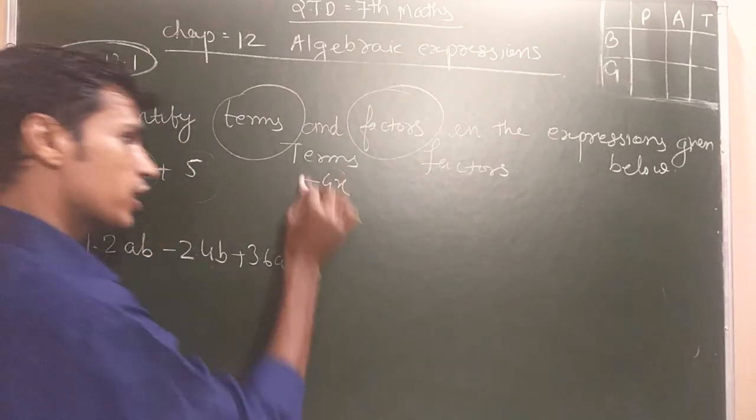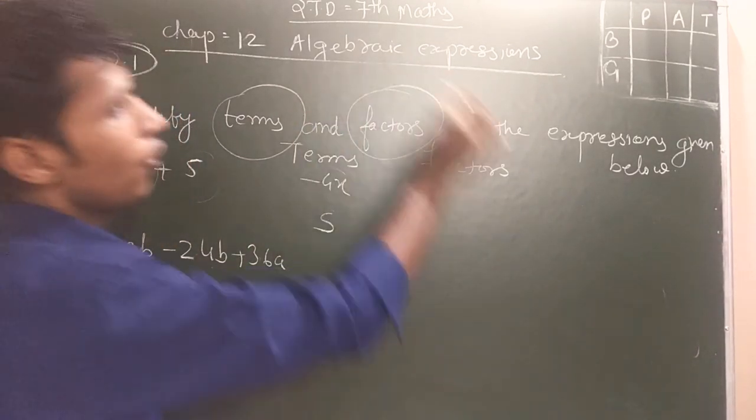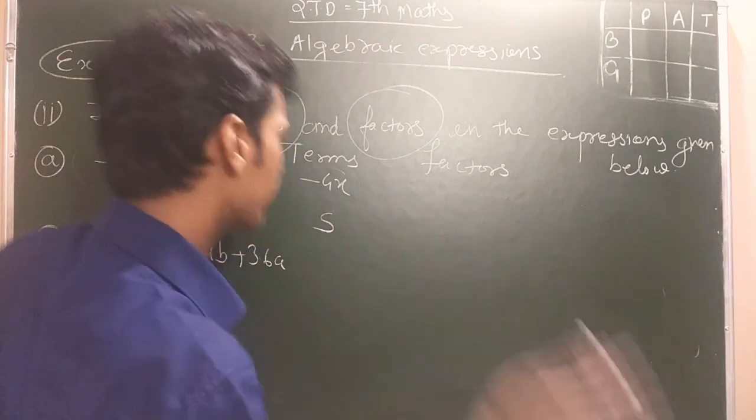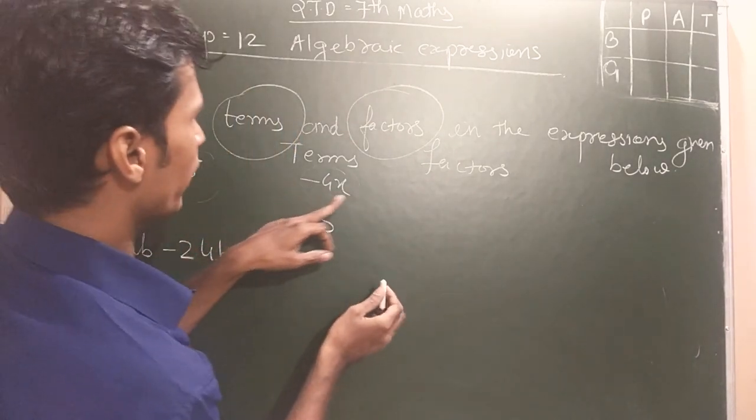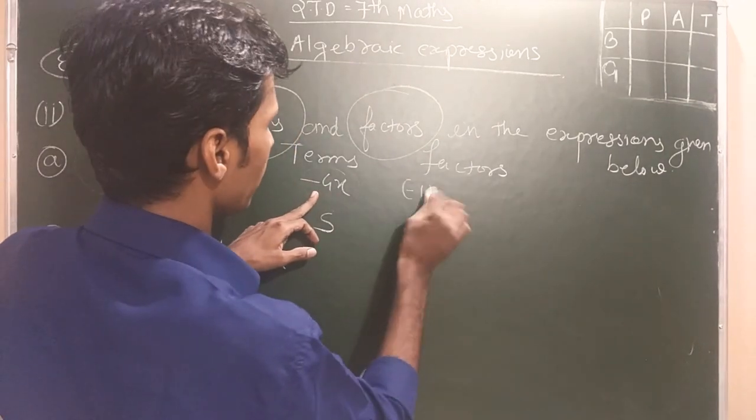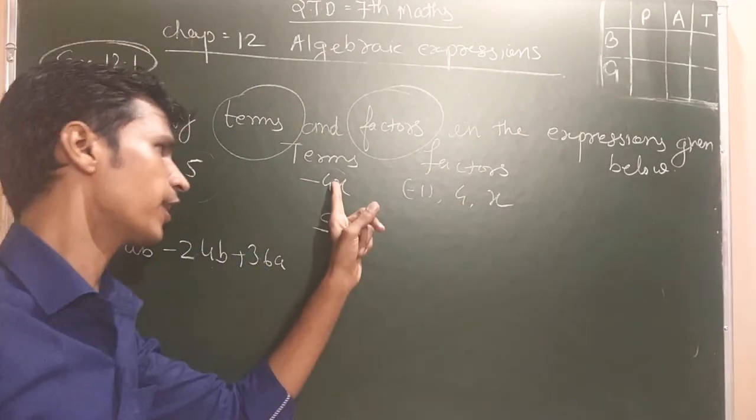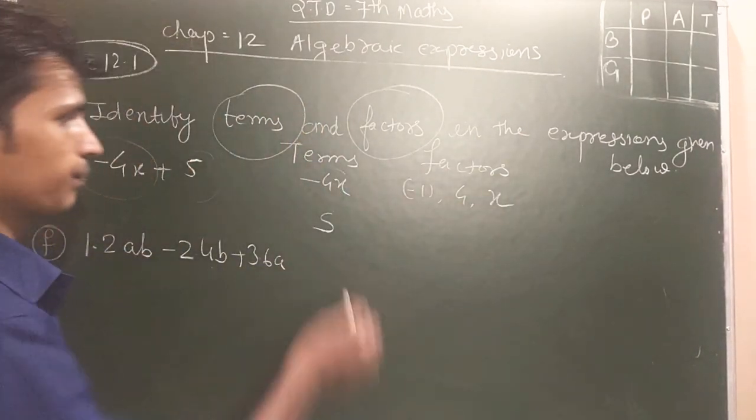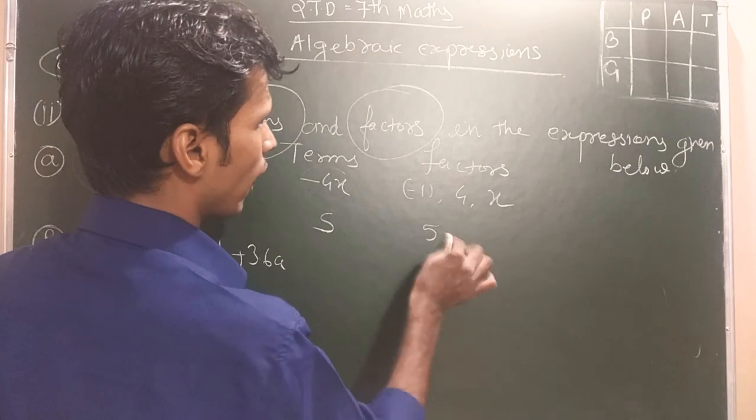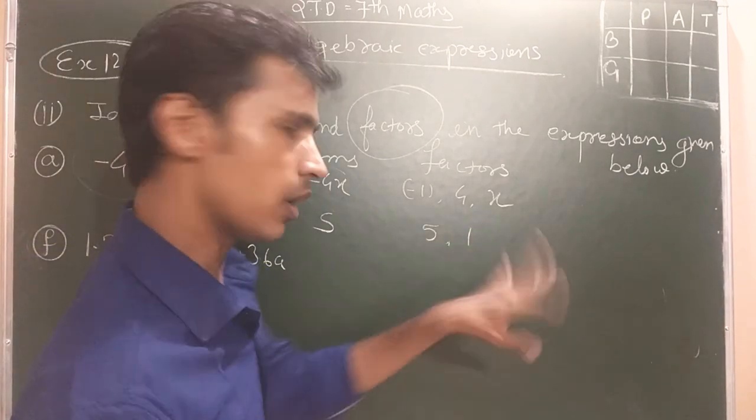Now we have to find factor in this form. So how do we find factor? Minus 4x: minus 1, 4 and x. They are three factors. And minus 4x, 5 factor: 5 and 1.